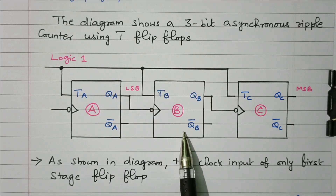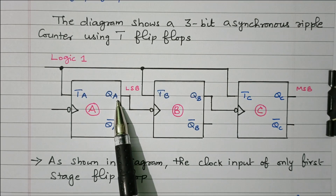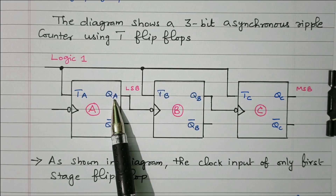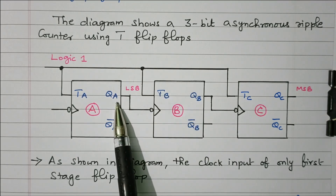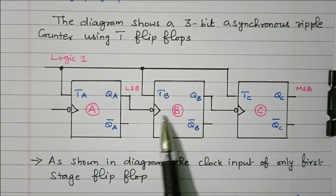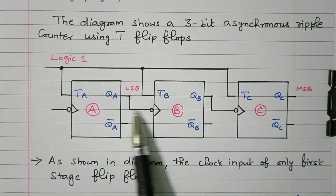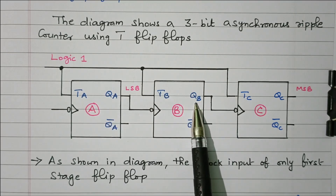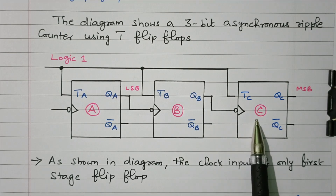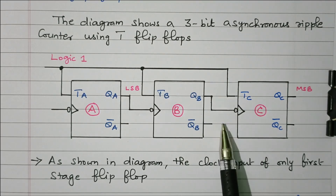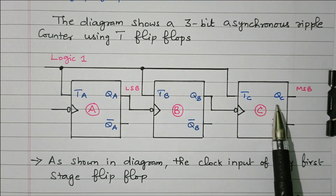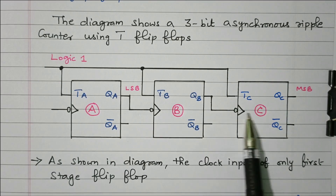Because the clock is inverted, if QA is 0, after inversion 1 is applied, so QB will toggle. If QA is 1, after inversion 0 is applied, so no change — QB maintains the same state. Similarly for QC: QB is the clock pulse for the third flip-flop. When QB is 0, QC will toggle; when QB is 1, no change in QC.